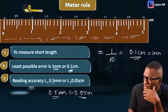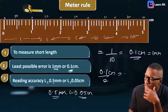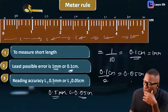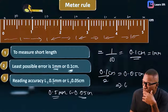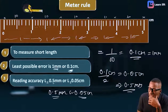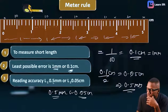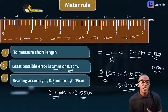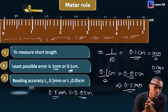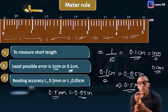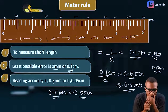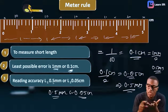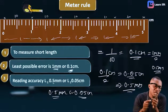Now, if we take this 0.1 centimeter and divide it by 2, we get 0.05 centimeter. And if you convert this to millimeter, it is 0.5 millimeter. That is why we say the reading accuracy in millimeter is 0.5, but in centimeter it is 0.05. So the reading accuracy is 0.5 millimeter or 0.05 centimeter. The utilities of the meter rule: it measures short length, has a least possible error of 1 mm or 0.1 cm, and a reading accuracy of 0.5 mm or 0.05 cm.